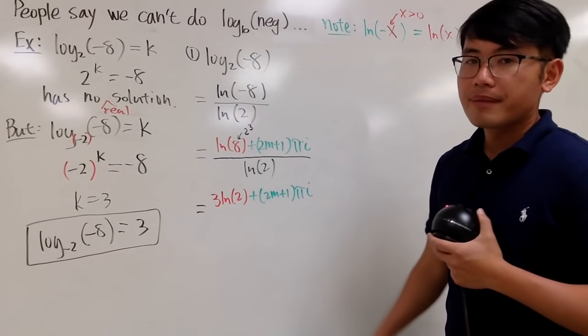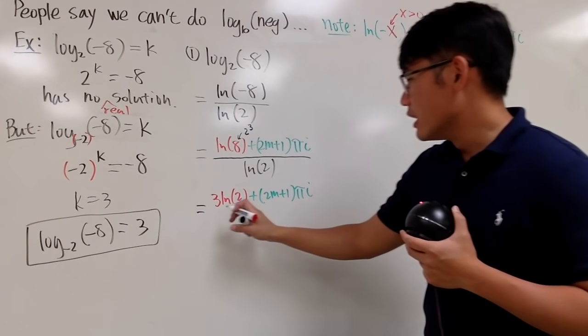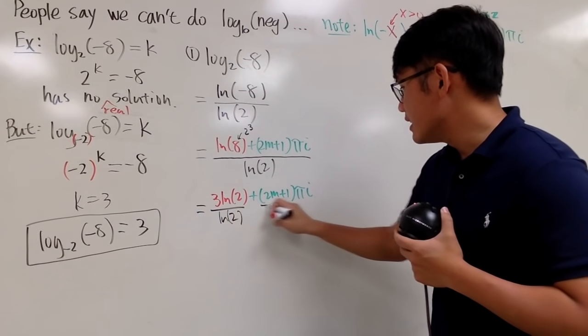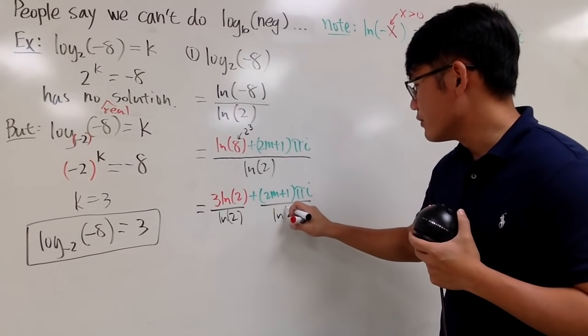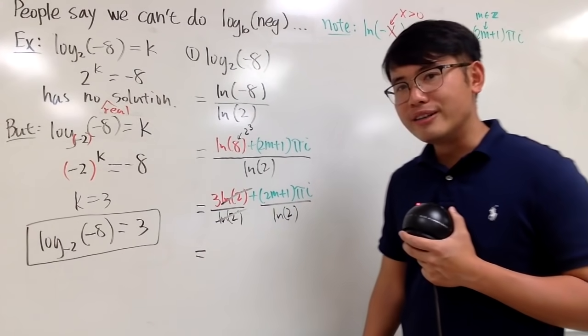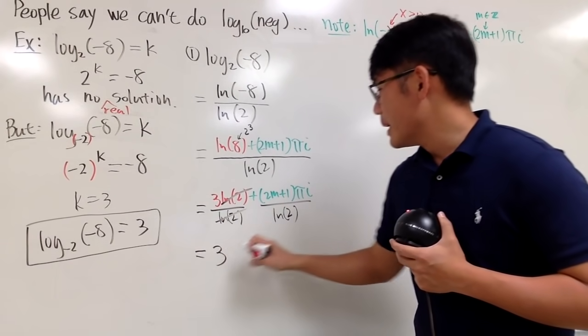And we just put down plus 2m plus 1, pi i. And we can, of course, divide this by natural log of 2. And then divide this by natural log of 2. And, of course, this and that will be cancelled. So, we actually end up with 3 plus...